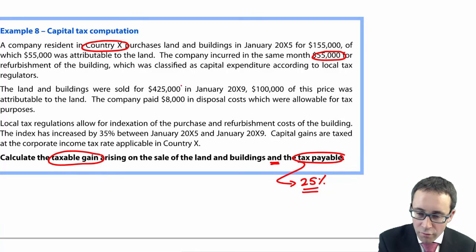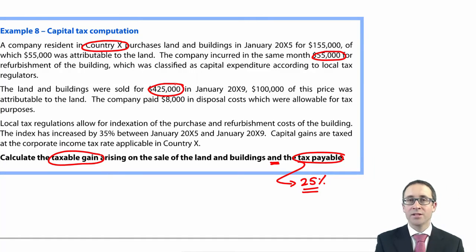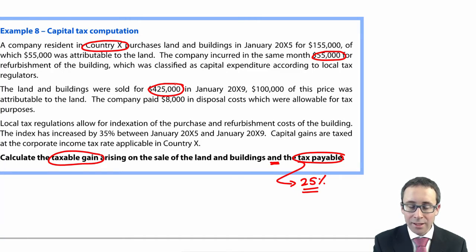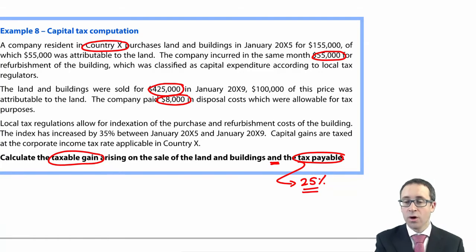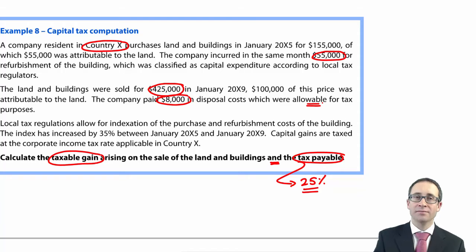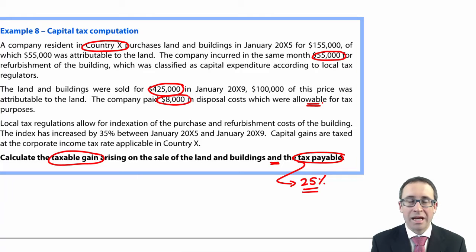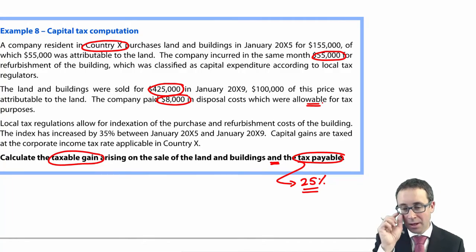The land and buildings were sold for $425,000 — that is the proceeds. $100,000 of this was attributable to the land. The company paid $8,000 in disposal costs, which were allowable for tax purposes. These are costs incurred in selling the asset — maybe advertising, marketing, or auctioneer fees. They are allowable, so they will be a deduction from the gain.